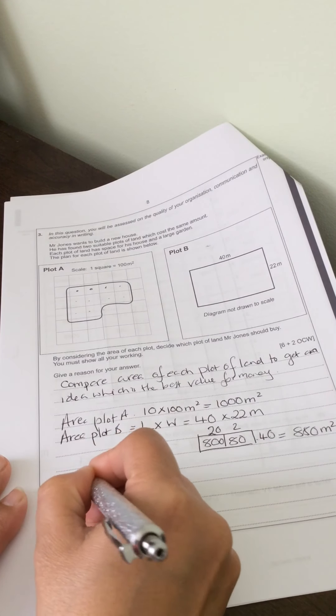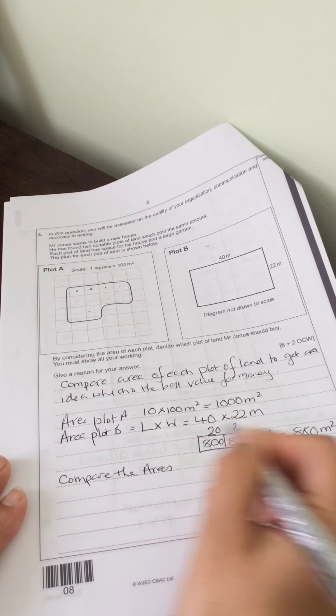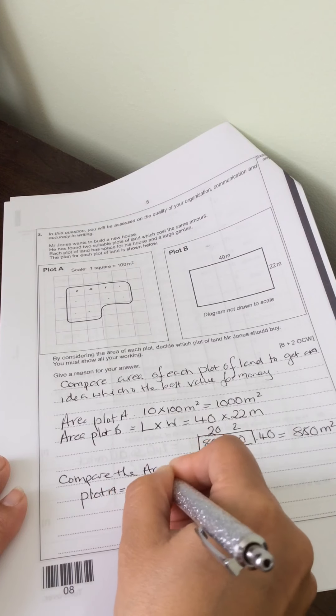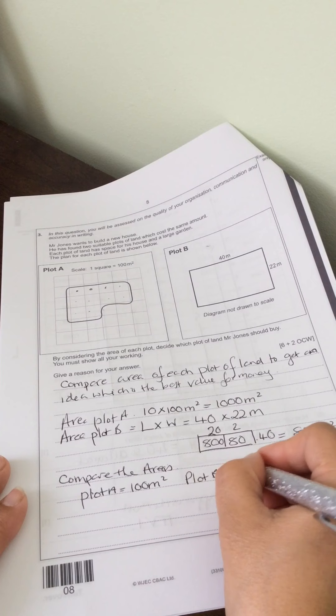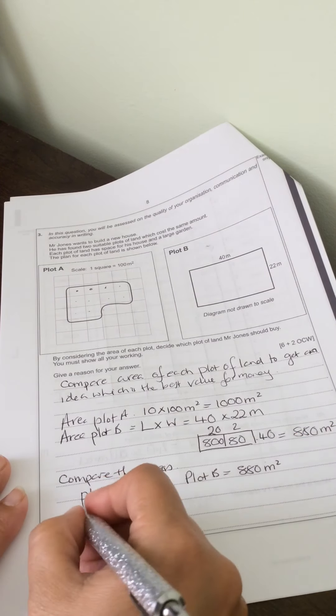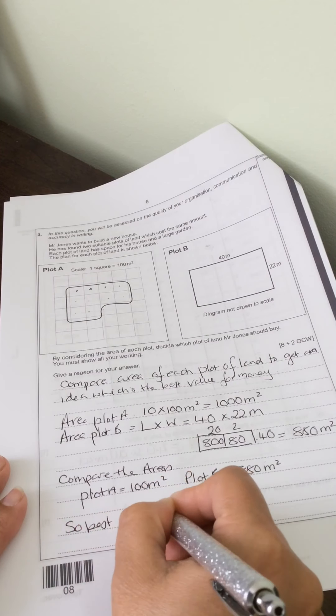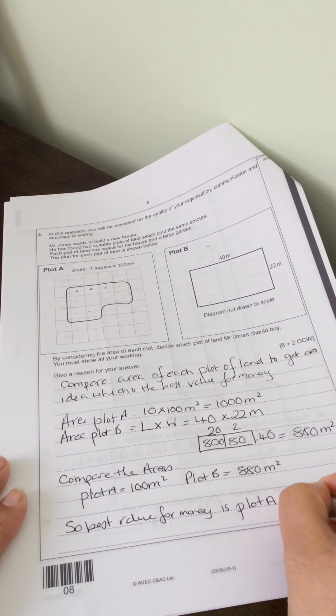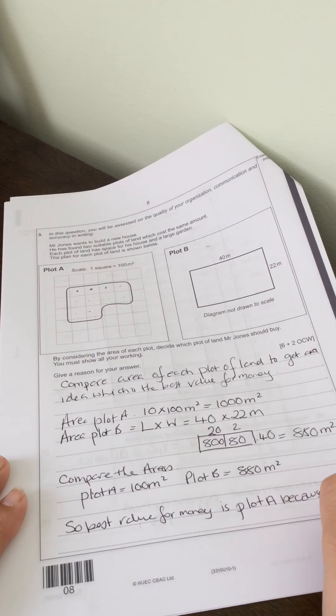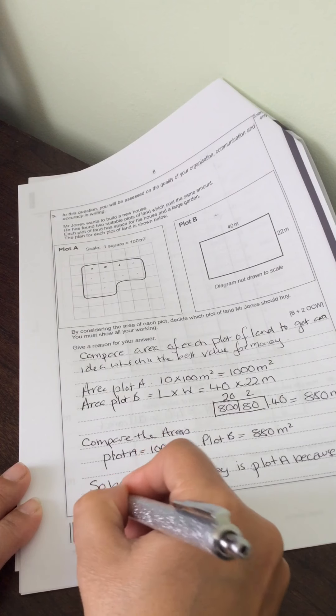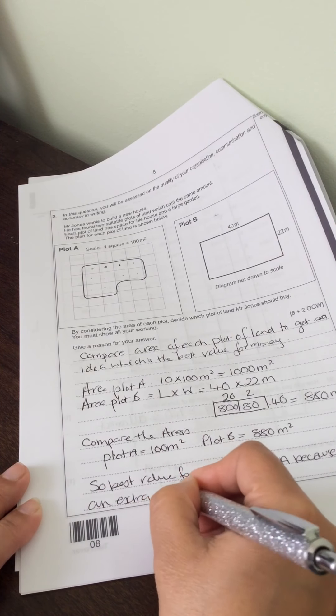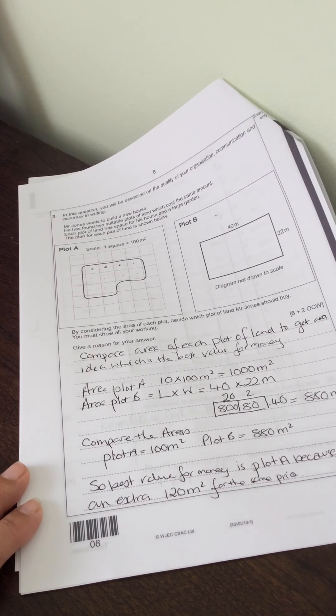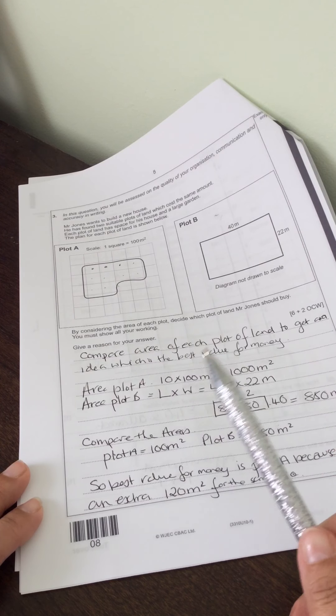So we now need to compare the areas. So plot A is 1000 metres squared. Plot B is 880 metres squared. So the best value for money is plot A because it has an extra 120 metres squared for the same price. So we've explained exactly what we're going to do. We've explained how we're going to compare them and then we have compared them.